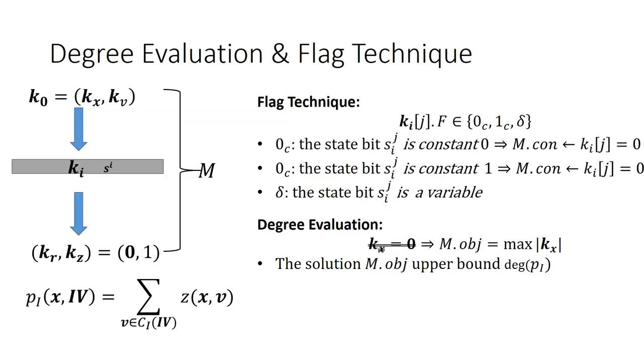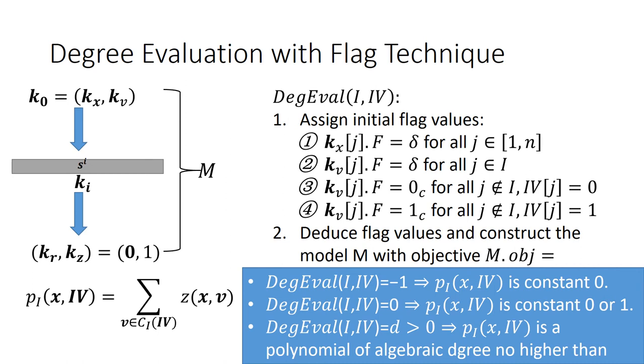After being introduced to the realm of cube attacks, the division property has further developed. New techniques such as flag technique and degree evaluation are proposed. The former improves the accuracy of the division property by imposing each bit with a flag value to control the model construction process. The latter replaces the traditional constraints kx equals 0 with an objective function maximizing the Hamming weight of kx, so as to upper bound the algebraic degree of the superpoly. Combining the two techniques is the division property based degree evaluation algorithm with flag technique. If the algorithm returns minus 1, the superpoly is constant zero. If it returns zero, the superpoly can be either constant zero or constant one. For positive integer d, the superpoly is a polynomial of degree no higher than d.